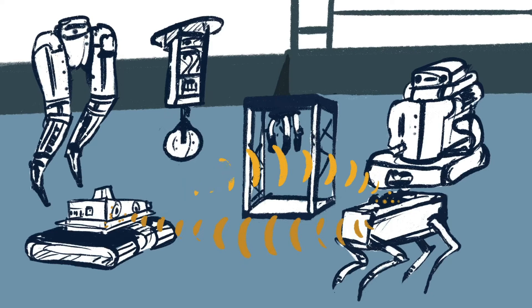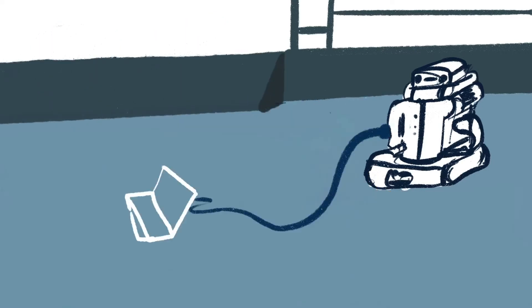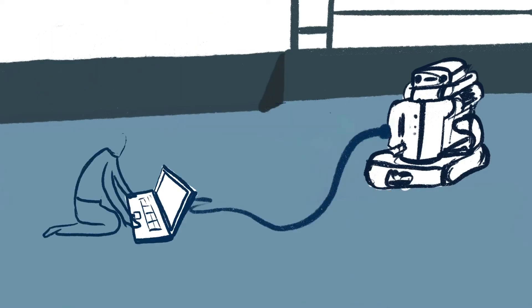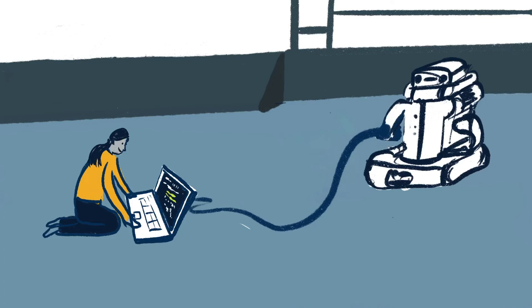And they need engineers to program their controls. Computer scientists teach robots how to start and stop moving based on what they see. Sometimes they even add artificial intelligence, or AI, to help the robot learn from its mistakes.